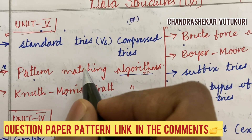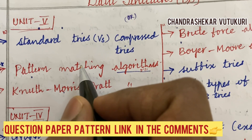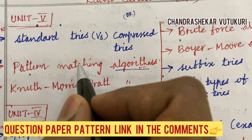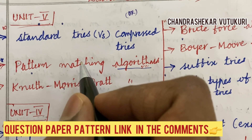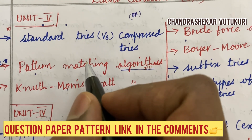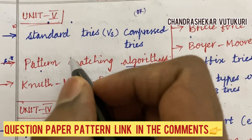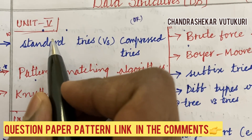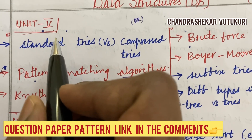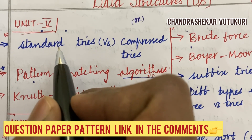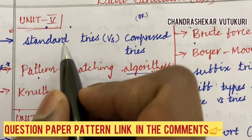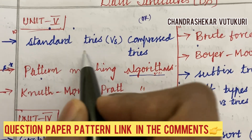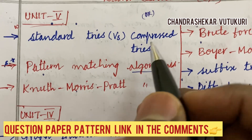You need to be thorough with all the concepts and do not skip my video. I am going to give you certain important tips and let you know which units you are supposed to prepare. The first and foremost unit I have taken into consideration is Unit 5, because you are going to take your Mid 2 within a week. The first and foremost question I can give you is standard tries versus compressed tries.